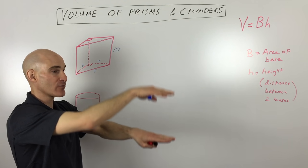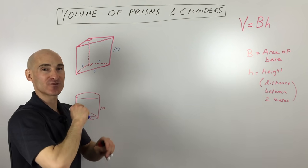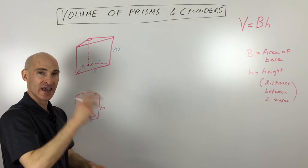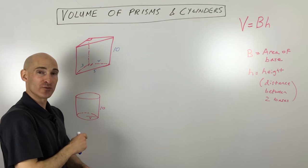They're parallel and congruent bases separated by the height. That's what a prism is. A cylinder is basically the exact same thing - it looks like a can of some sort. You can almost think of it as a circular prism.